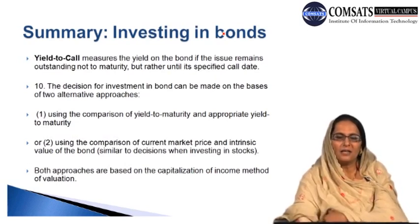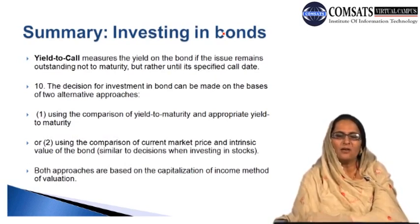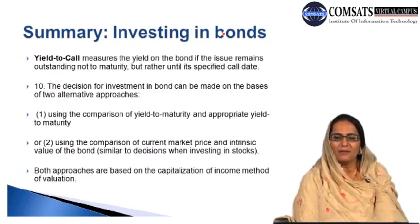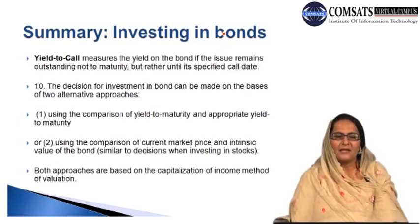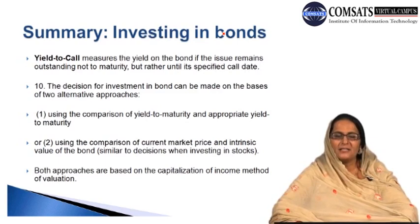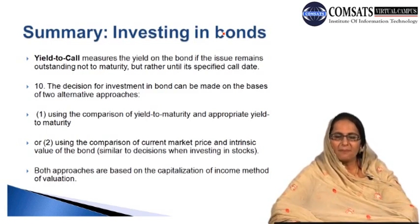Current yield indicates the amount of current income a bond provides relative to its market price. Yield to maturity is the fully compounded rate of return earned by an investor over the life of the security, including interest income and price appreciation — the most important and widely used measure of bond returns and key measure in the bond valuation process. Yield to call gives the yield on the bond if the issue remains outstanding not to maturity but until its specified call date.